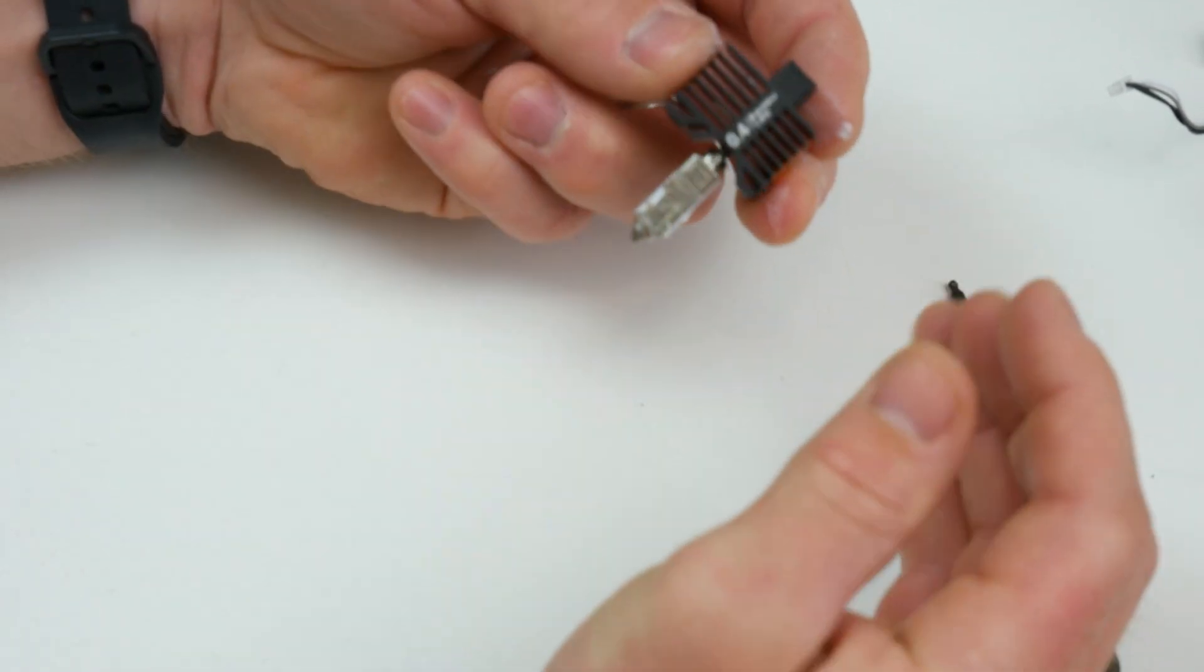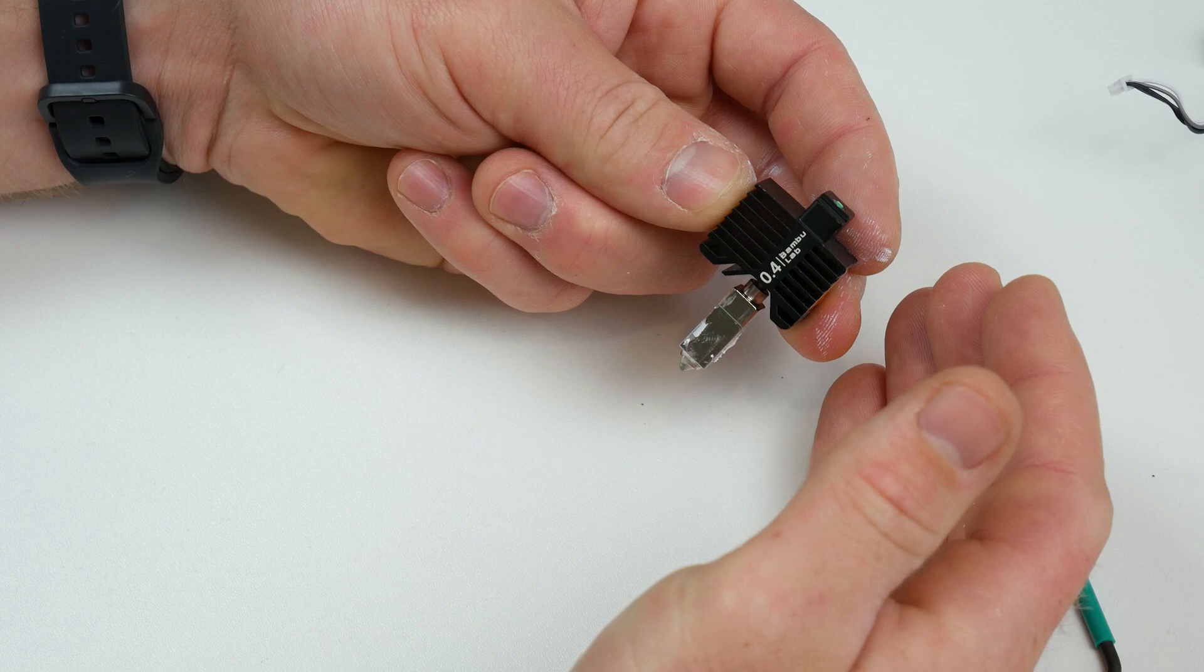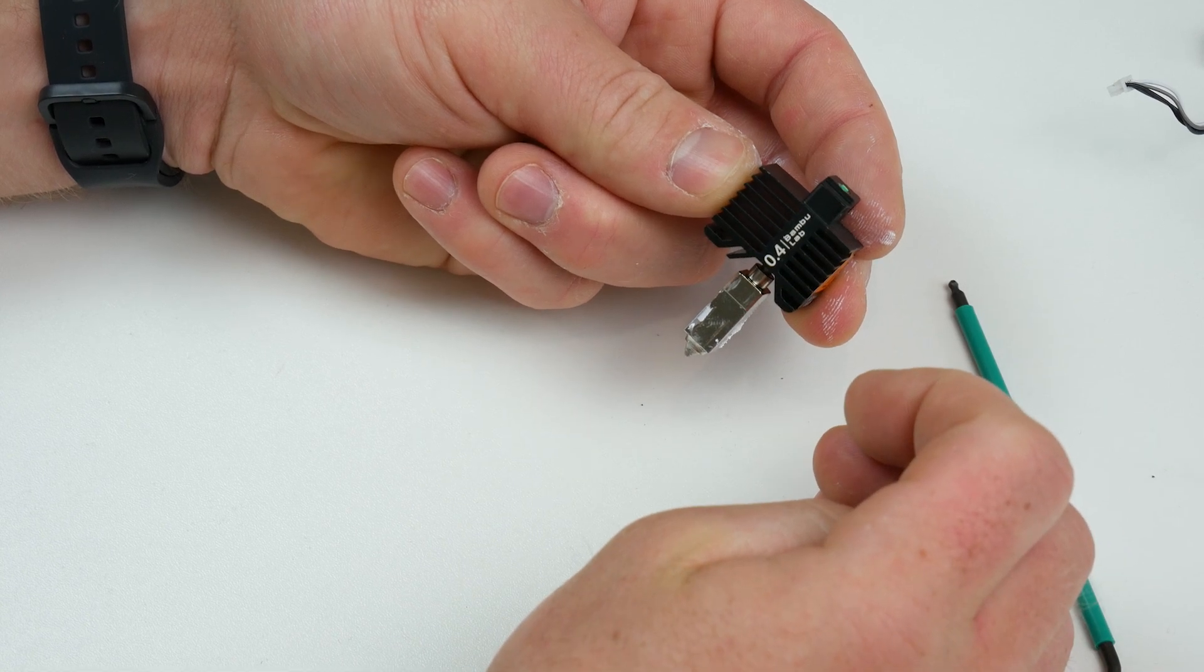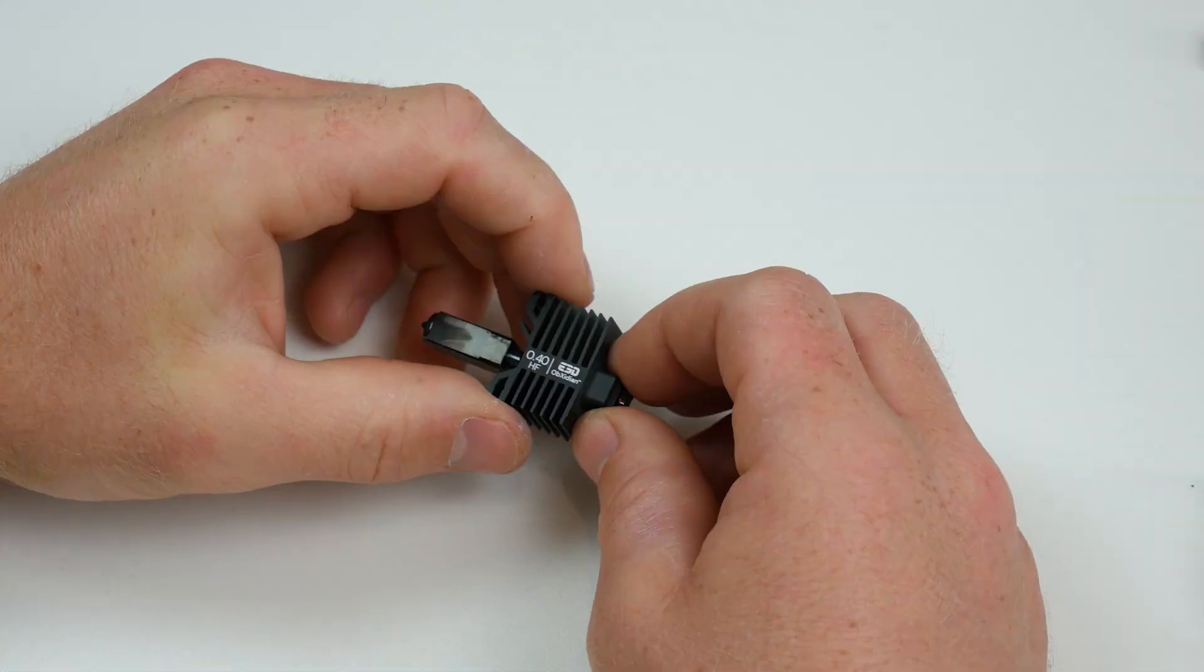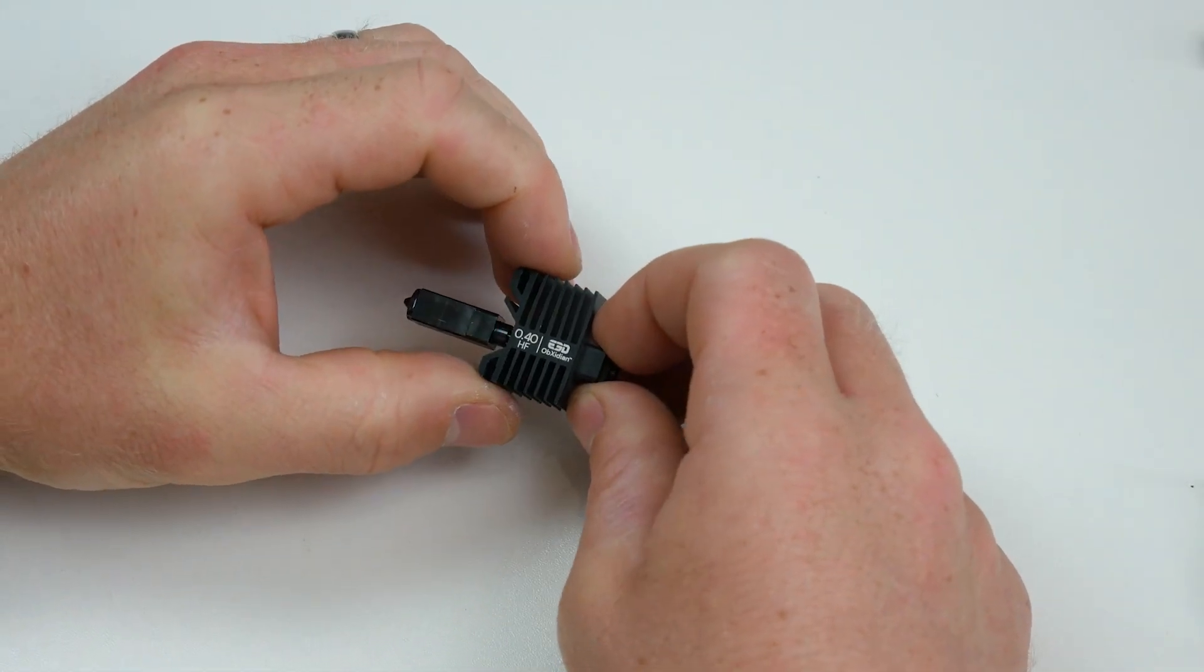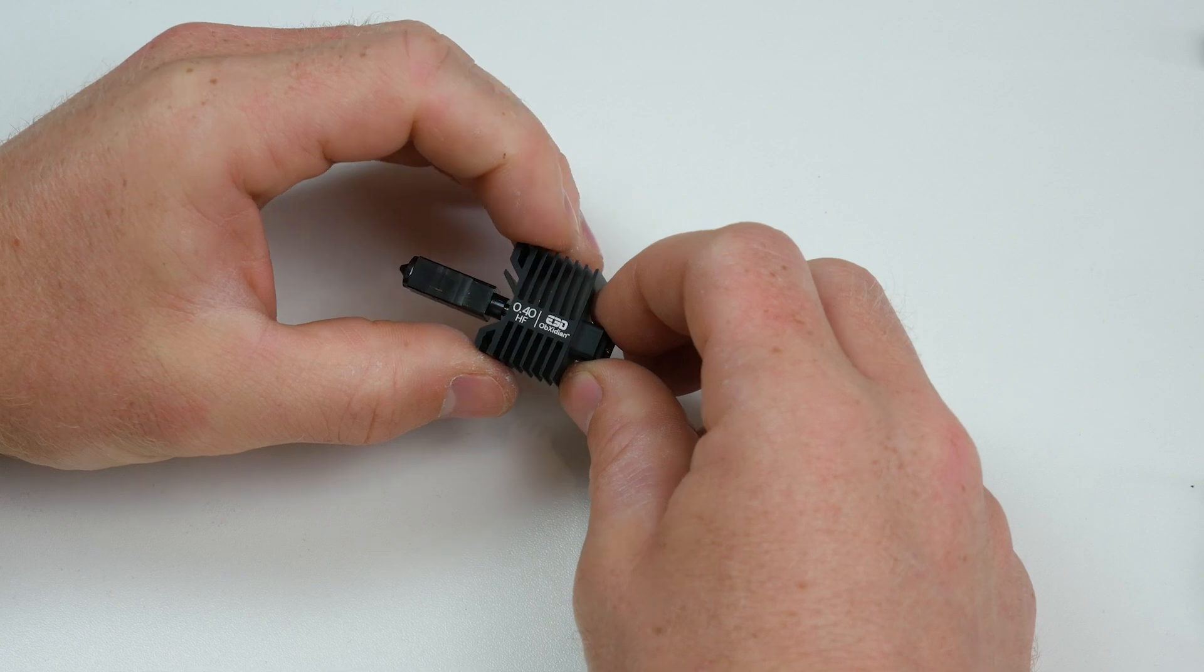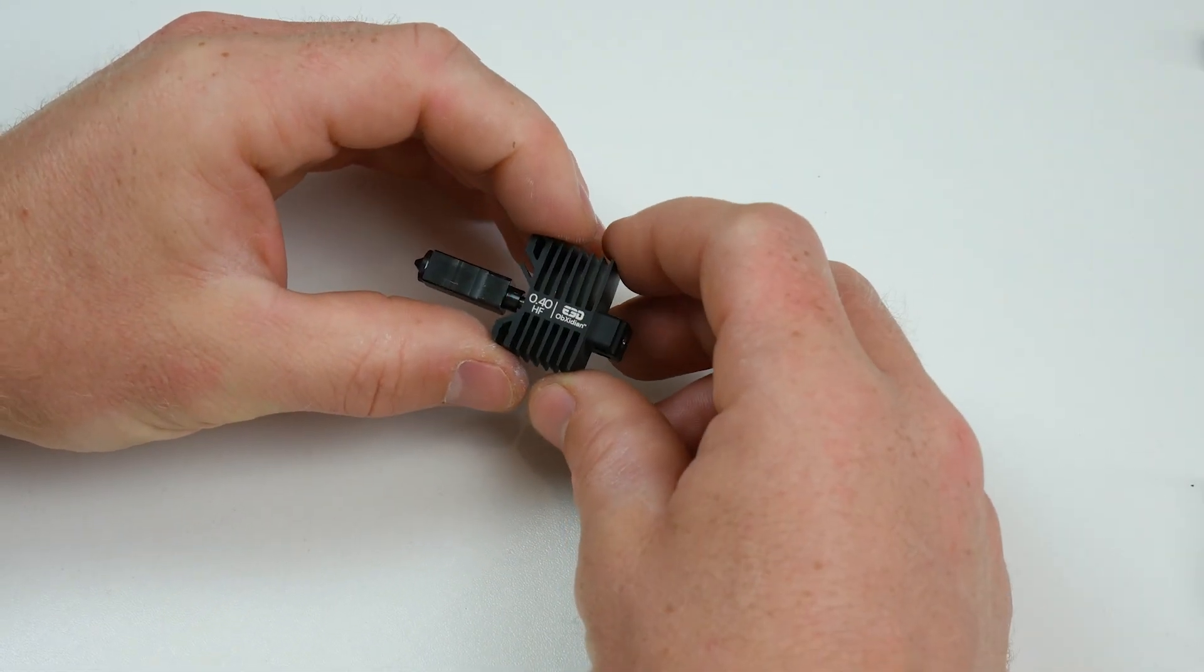We've now got our old hotend sat here, nozzle assembly. We can keep this for future times. This isn't damaged, so I'm just going to keep this to one side. Now that we've successfully removed all of the components from the original hotend, we can now start to assemble the E3D high flow obsidian one.